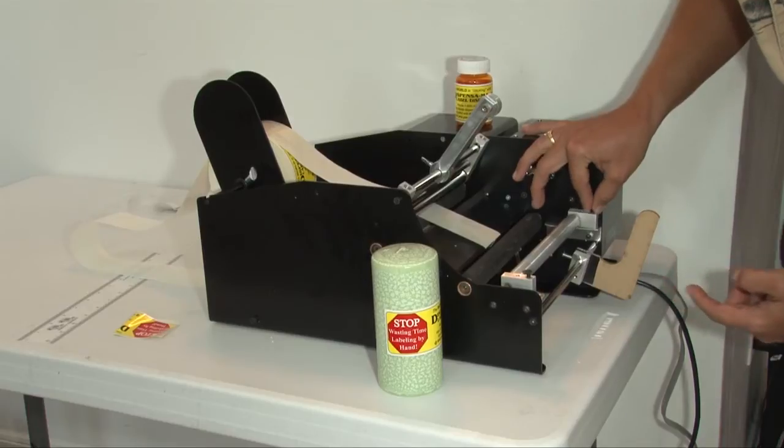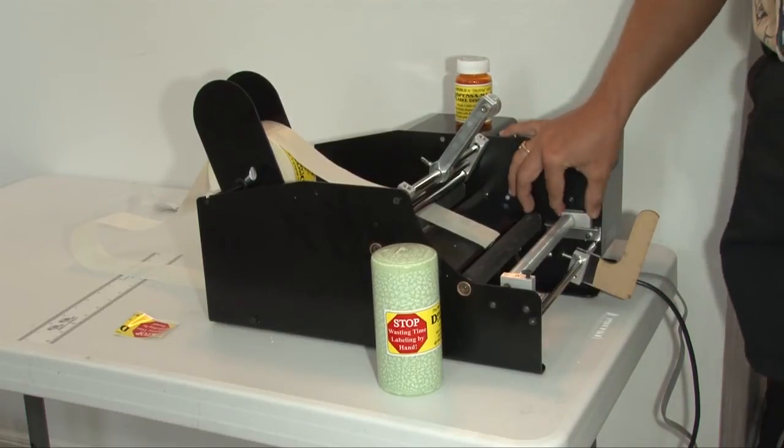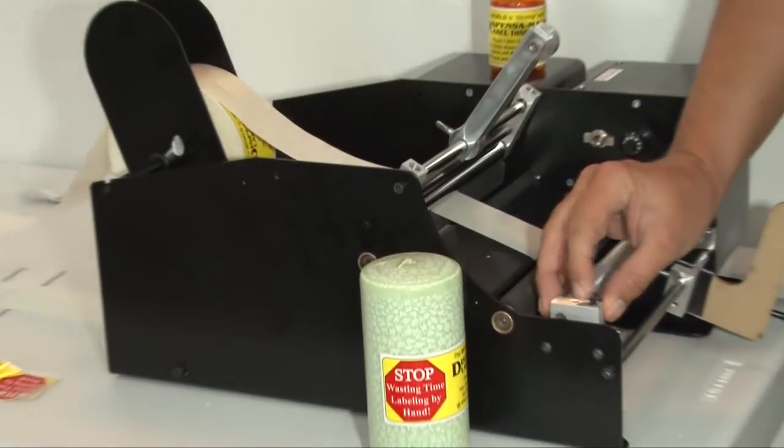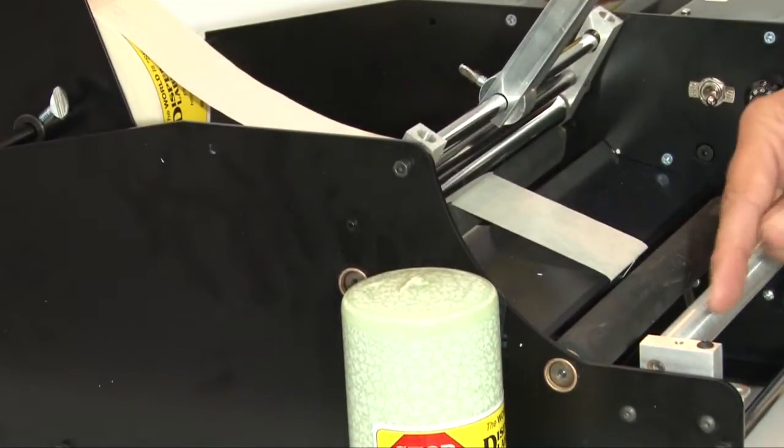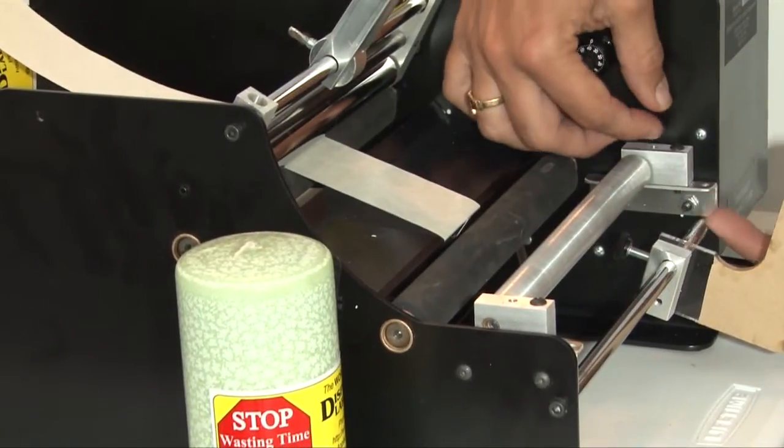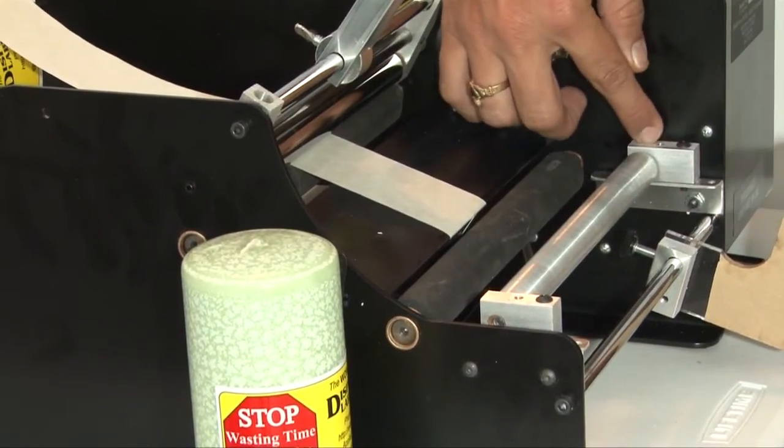Always remember, if you do have a taper container, that the label is going to start going up on the container and then eventually go down. So you just want to adjust the taper on the roller so that whenever it starts and stops, it's in the same position.